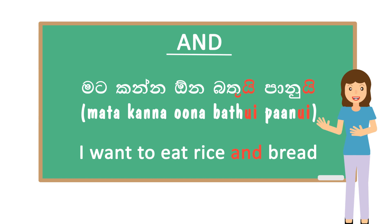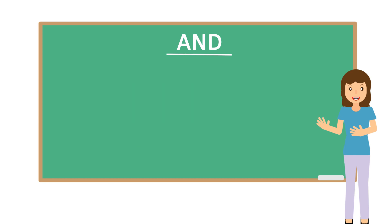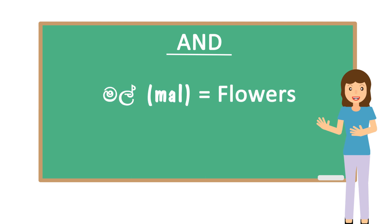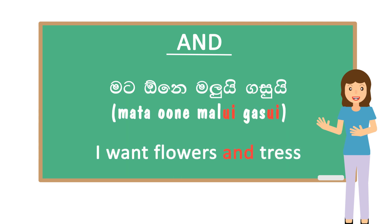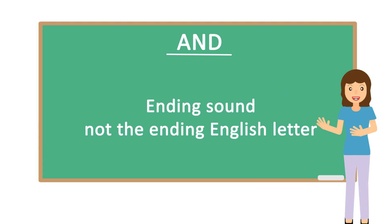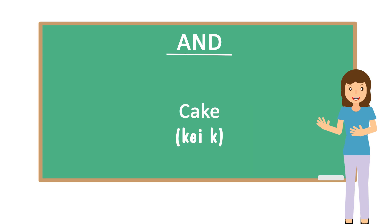Let's look at some more examples. How do you say 'I want flowers and trees'? The word for flowers is MAL, and the word for trees is GAS. Because both end with consonant sounds, you have to add UI at the end. Remember, you have to look at the ending sound, not the ending English letter. Even if it is an English word, if it ends with a consonant sound, you have to add UI.